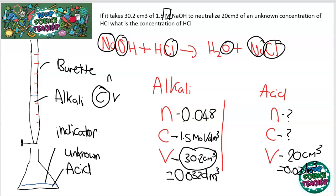Because the equation is balanced — 1 Na on each side, 1 chlorine on each side, 1 oxygen on each side, 2 hydrogens on each side — it's a one-to-one ratio of acid to alkali. So the number of moles of acid equals the number of moles of alkali. Now I can calculate the concentration of the unknown acid using the triangle: concentration equals number of moles divided by volume, which equals 2.4 mol/dm³.